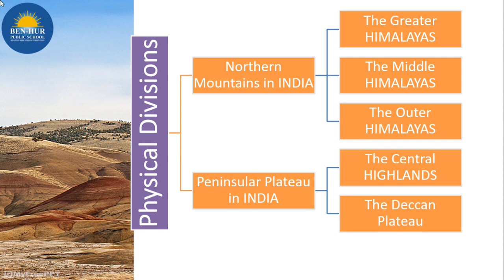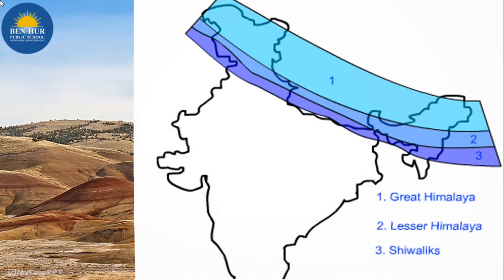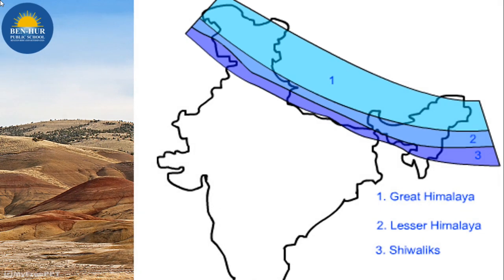The Himalayas are divided into three parts: the Greater Himalayas, the Lesser Himalayas (also called Middle Himalayas), and the Outer Himalayas.